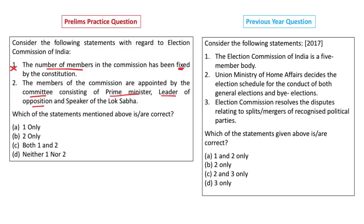Statement 2: The members of the Commission are appointed by a committee consisting of the Prime Minister, Leader of Opposition in the Lok Sabha, and Speaker of the Lok Sabha. You should be aware of the debate surrounding the appointment of the Chief Election Commissioner. Many committees and commissions, including the Law Commission of India, have suggested a search panel — either this composition or one including the Chief Justice of India. However, presently no such search committee exists; the appointment is done by the President on the advice of the Cabinet. So this statement is also incorrect.